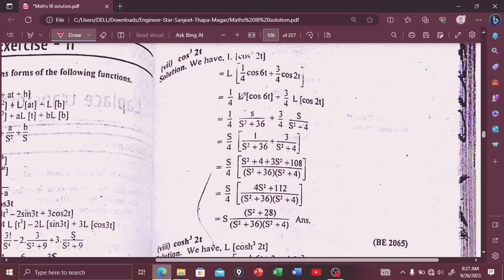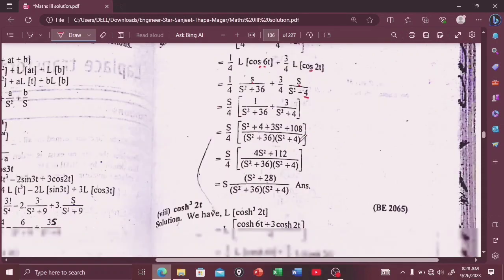Now it will be 1/4 Laplace transform of cos 6t plus 3/4 Laplace transform of cos 2t. So it is 1/4, since it is cosine, writing s over s² plus a², that is s over s² plus 36, and 3/4 times s over s² plus 4.